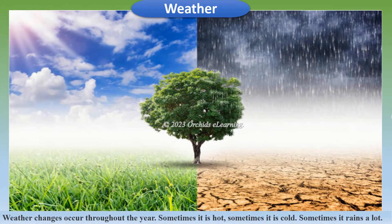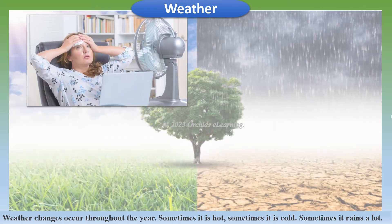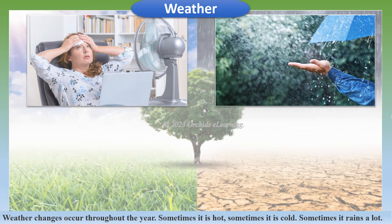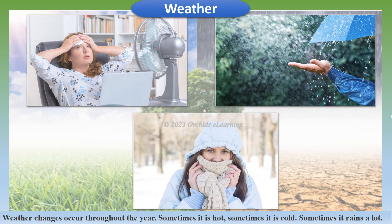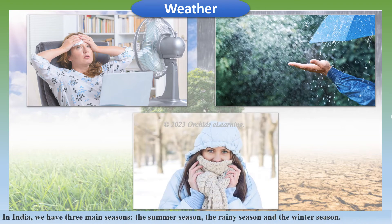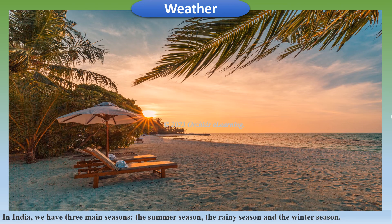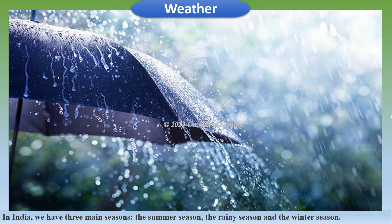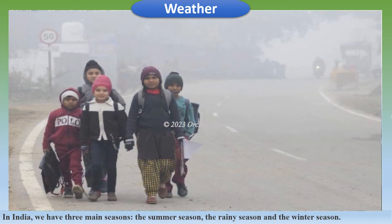Weather changes occur throughout the year — sometimes it is hot, sometimes it is cold, and sometimes it rains a lot. In India, we have three main seasons: the summer season, the rainy season, and the winter season.